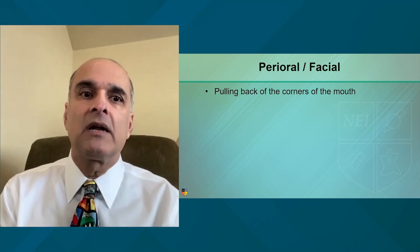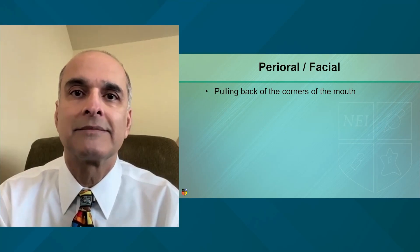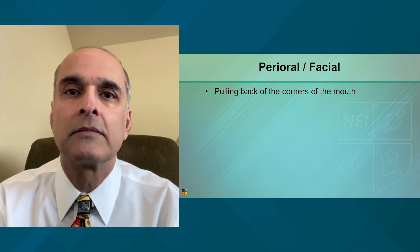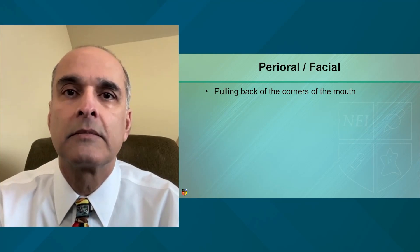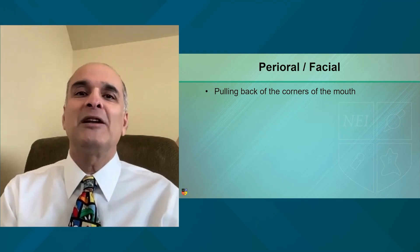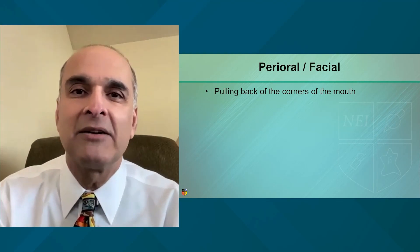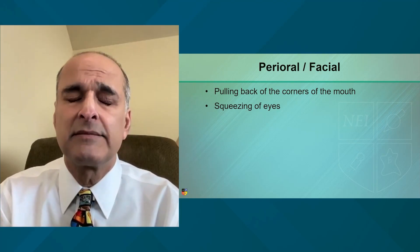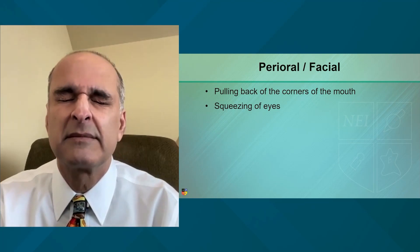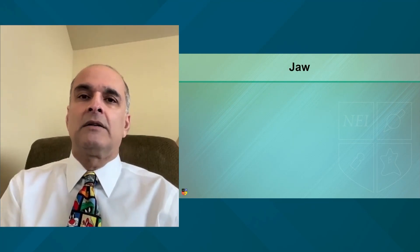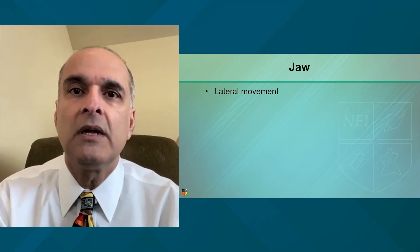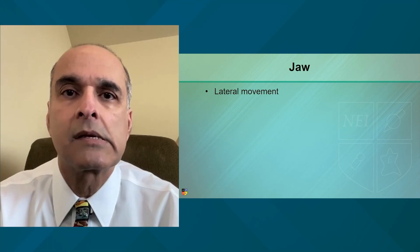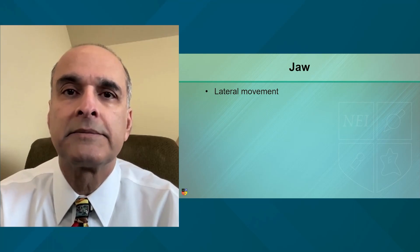Perioral or facial movements — for example, pulling back the corners of your mouth. When I tell my children a dad joke, that's how they smile — they do this. So pulling back the corners of the mouth, squeezing of the eyes. The jaw: lateral movements and chewing — let's do it together.